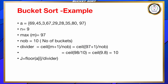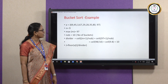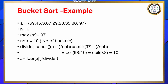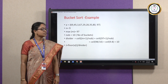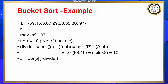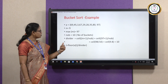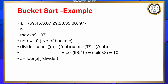Now we are going to see an example of bucket sort. The input array a has values: 69, 45, 3, 67, 29, 28, 35, 80, and 97. The total number of elements is 9, so n equals 9. The maximum value from the given input elements is 97, so variable m is 97. Since we have 9 elements, let us have the number of buckets as 10.